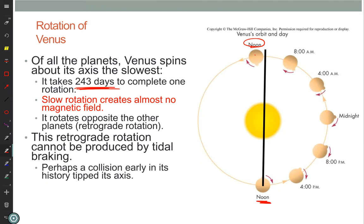So that slow rate has some implications. I highlighted in red one of these implications. The slow rotation creates almost no magnetic field. What were the three things that we needed to create our magnetic field? Rotation, convection, and what? That's right.